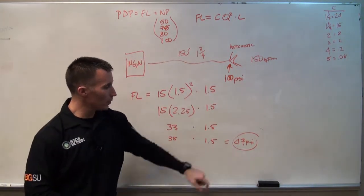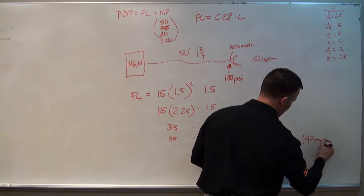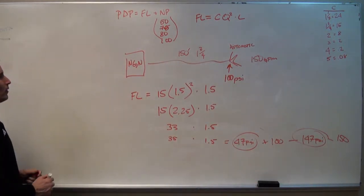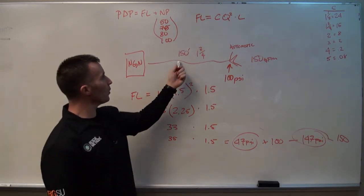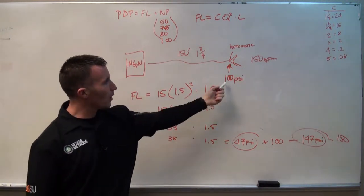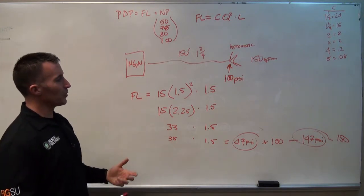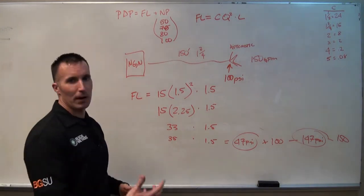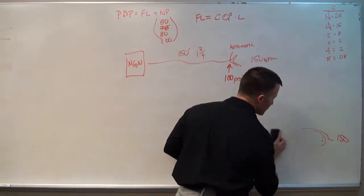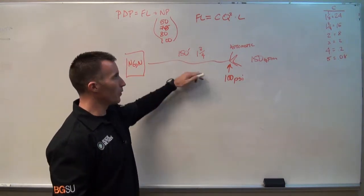In this case, we're going to add it to 100, which is our nozzle pressure. Here we end up with 147 PSI. And in reality, we're going to pump that at 150. So it's important to understand that on 150 foot of inch and three quarter flowing 150 gallons a minute with an automatic nozzle, here we end up with a pump discharge pressure of 150 PSI. One of the things we're going to find as we continue to do example after example is that utilizing these same coefficients, our friction loss becomes consistent for the volume that's discharged over the varying hose lines.